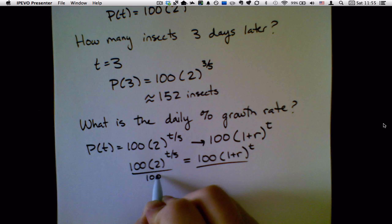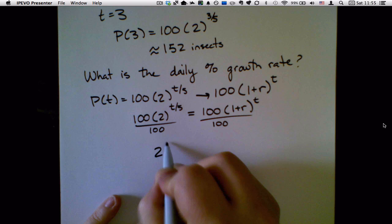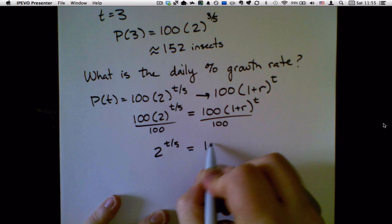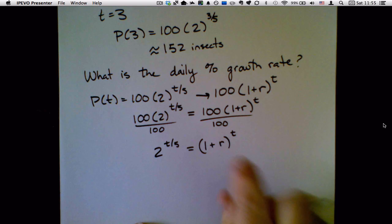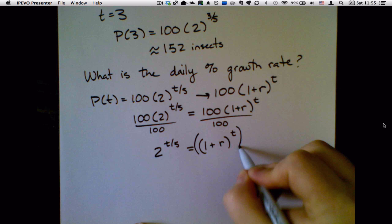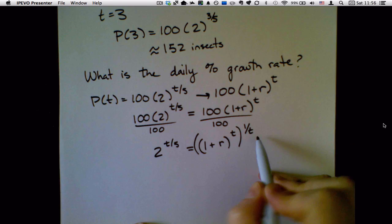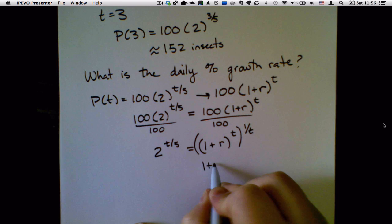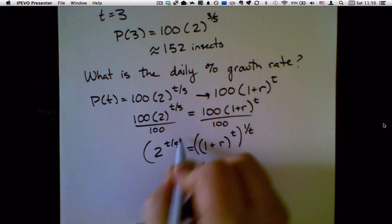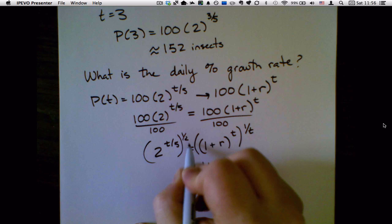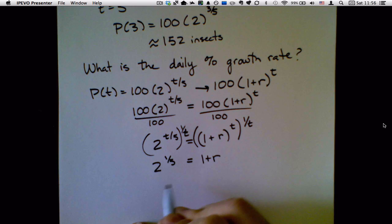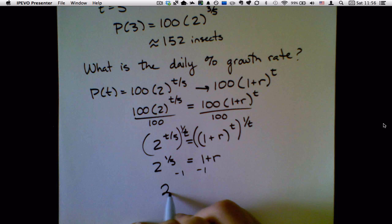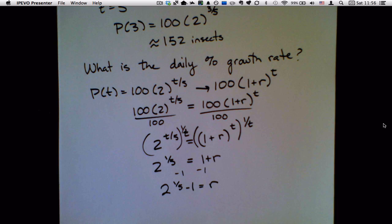First, divide by 100, so 2 to the t over 5 equals 1 plus r to the t. Then take both sides to the 1 over t power, which multiplies the exponents and gives 2 to the 1 fifth equals 1 plus r. Subtracting 1 from both sides, r equals 2 to the 1 fifth minus 1.